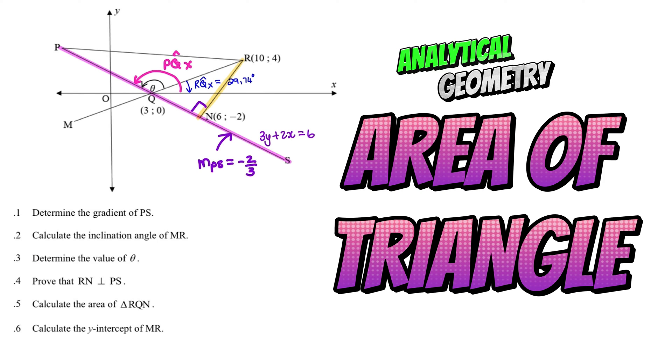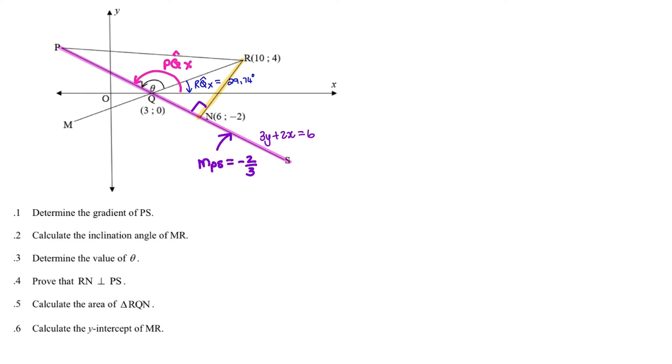Our fifth question is to calculate the area of RQN. So again, I'll use my highlighter and I'll highlight RQN. So I want to find the area of this green triangle.